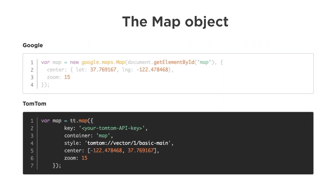Replacing the map object is trivial. Here we see a sample of how you might have it with Google, and down below you see how you use our TomTom Maps SDK to update your map object.